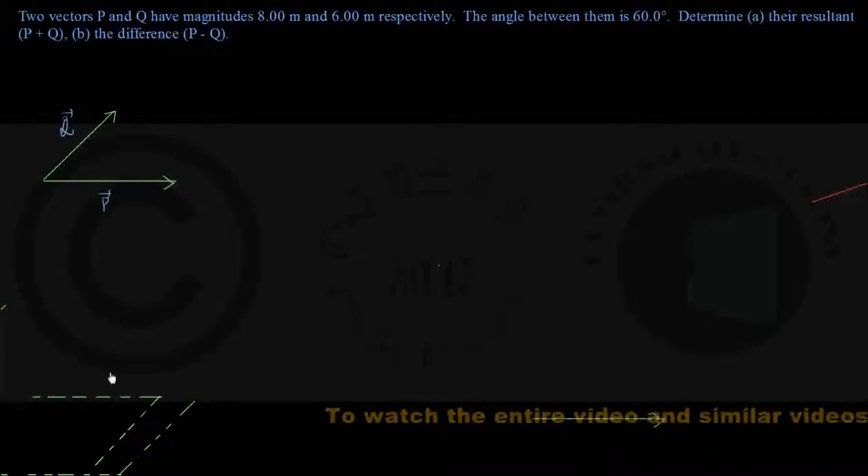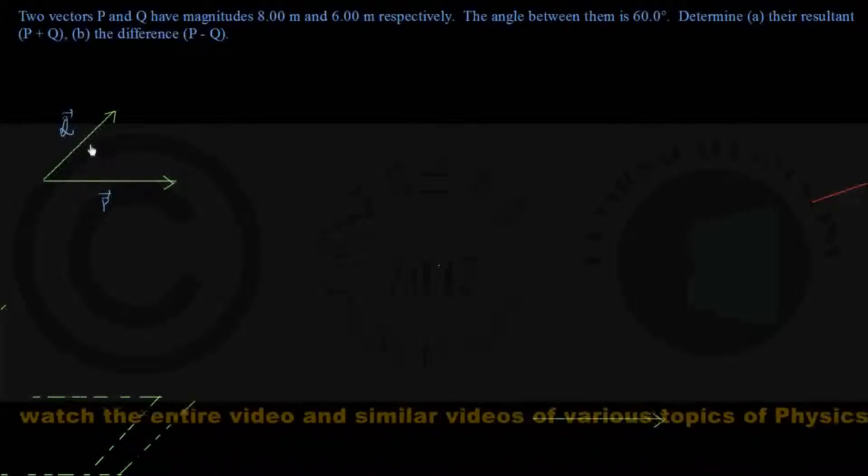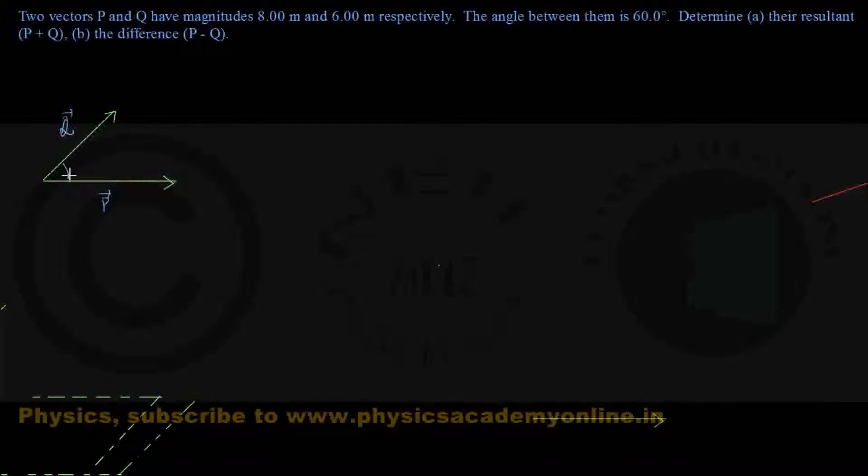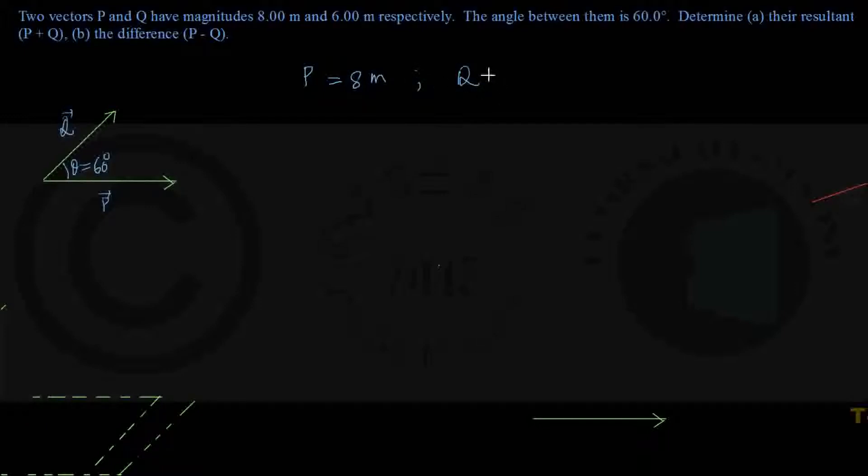I have joined them tail to tail so we have a common point and can construct a parallelogram. That is the first condition of applying parallelogram law. The angle between these two vectors, theta, is 60 degrees. Let's write the data: P equals 8 meters, Q equals 6 meters, and theta equals 60 degrees.